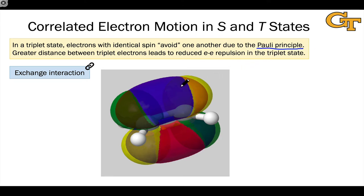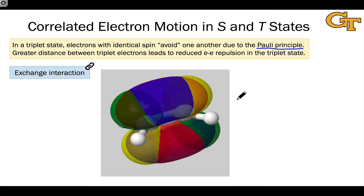So there's this intrinsic desire for triplet electrons to avoid one another. They just do it — they just avoid one another. And this leads to an energy lowering relative to the singlet state, where there is no spin-induced effect that keeps the electrons relatively far apart, leading to reduced electron-electron repulsion.